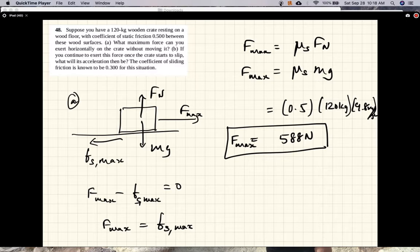Now part B says, once the box starts moving, you're still applying the same force. The friction force is now kinetic friction force. So the acceleration of the object is F minus F_k equals mass times acceleration.